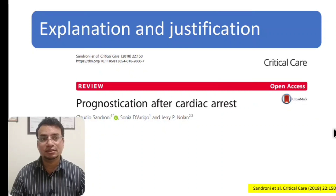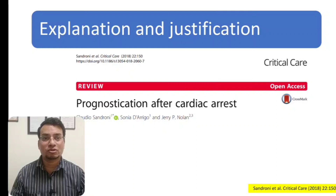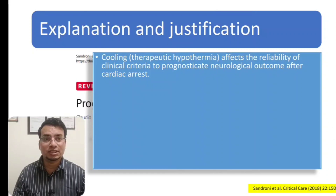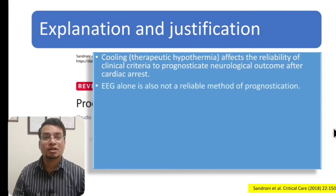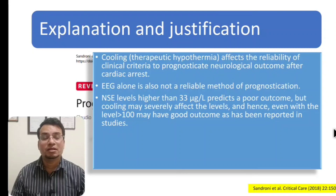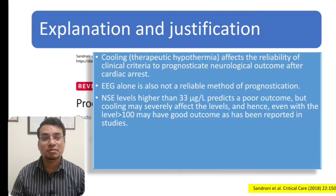There is a very good article published in 2018 in the Critical Care Journal by Sanroni et al. which clarifies many misconceptions and myths about neuroprognostication after cardiac arrest. A key concept: during cooling, you should not use any clinical criteria to prognosticate — that would be wrong. After 24 to 48 hours, once cooling is completely stopped and the patient has been rewarmed, you should prognosticate. EEG alone is not a reliable method of prognostication. NSE levels should be more than 33 micrograms per liter to predict poor outcome.